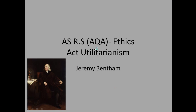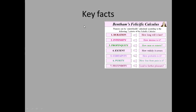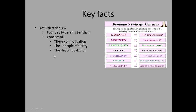Today we're going to look at the ethics side of the course for A-Level RS with AQA. We're looking at act utilitarianism, founded by Jeremy Bentham. A few key facts to bring into your A01 answers for the 30-marker: act utilitarianism is founded by Bentham and consists of three things — the theory of motivation, the principle of utility, and the hedonic calculus.